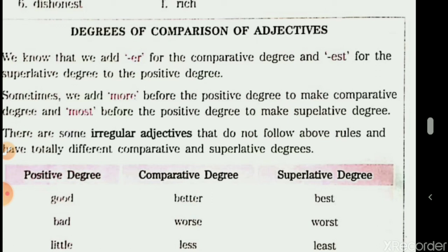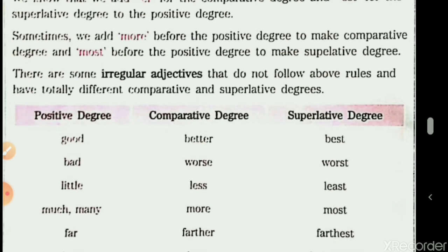Superlative degree is used when we compare more than two people or things. It denotes the highest degree of quality. And superlative degree is always preceded by the word 'the' — T-H-E. So: comparative degree is followed by 'than,' and superlative degree is preceded by 'the.'